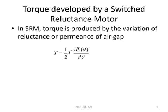Moving on to the first topic: torque developed by a Switched Reluctance Motor. For an SRM, the torque is produced by the variation of reluctance or permeance of the air gap, and it is given by the expression T = ½I²(dL/dθ), where I is the current flowing through the winding and L is the inductance, which is a function of rotor position θ.